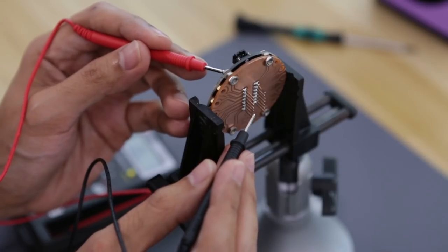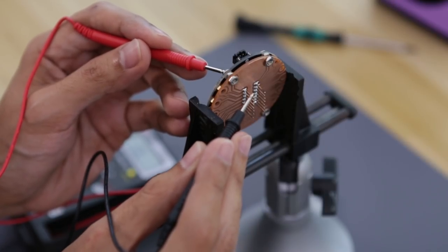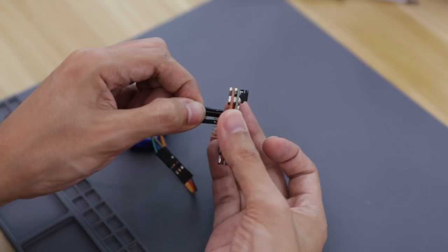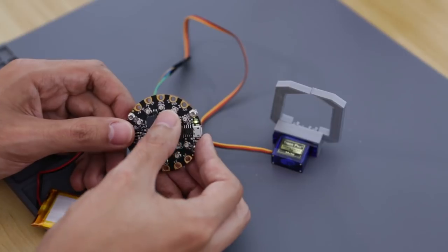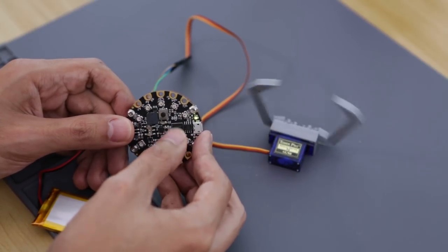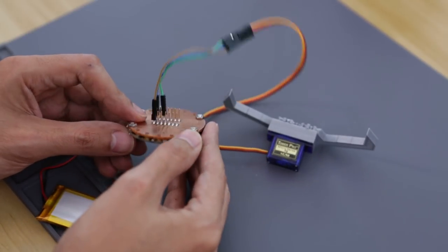A quick continuity test with the multimeter lets us know that we have solid electrical connections. This makes it so much easier to plug in jumper cables like from a microservo. There's plenty of extra pins to work with so you can hook up all sorts of components.